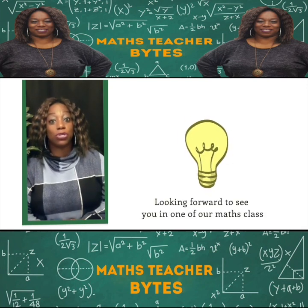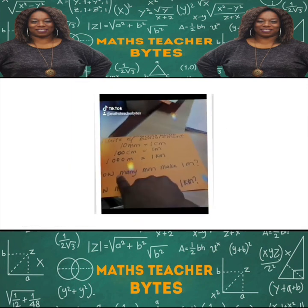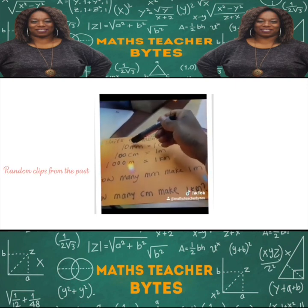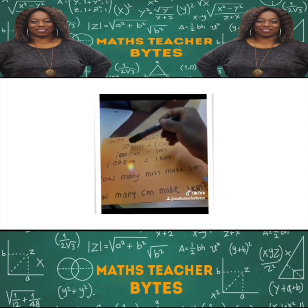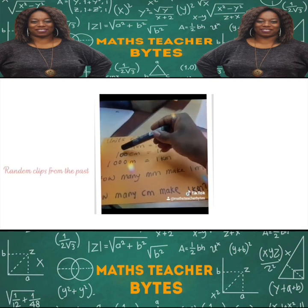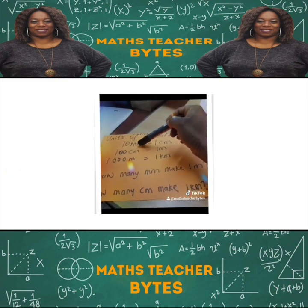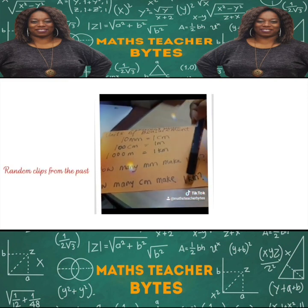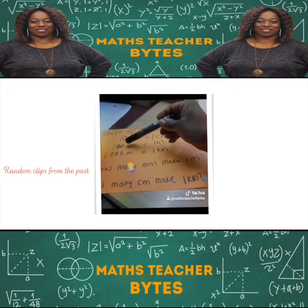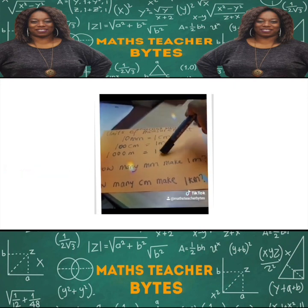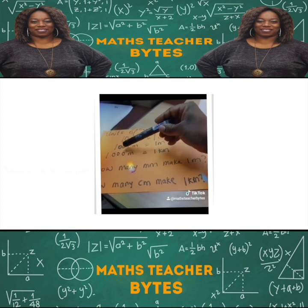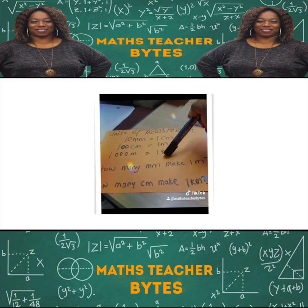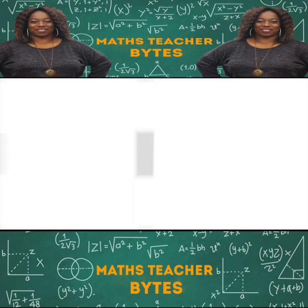If you're asked how many millimetres make one metre, count the zeros from millimetre to metre — that's three zeros, so a thousand millimetres make one metre. How many centimetres make one kilometre? Count the zeros from centimetres to kilometre — that's five zeros, so 100,000 centimetres make one kilometre.